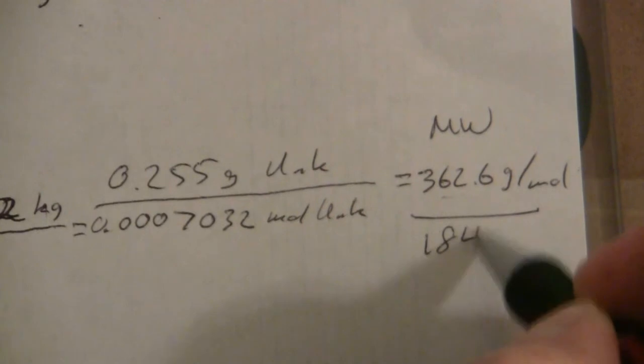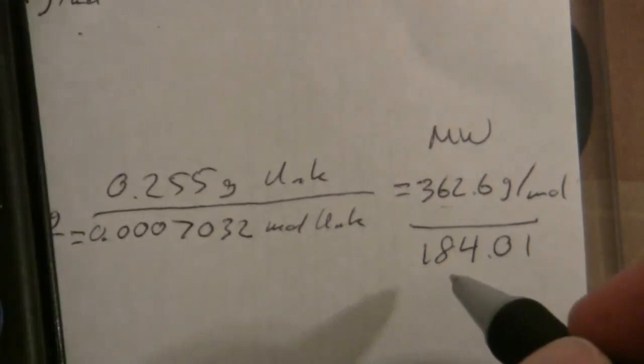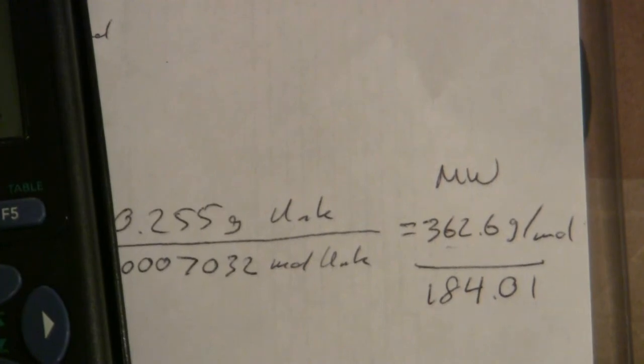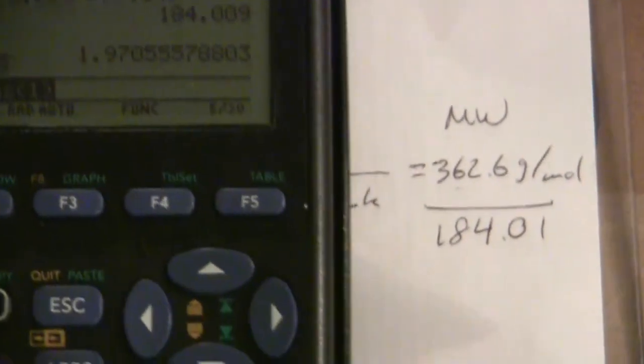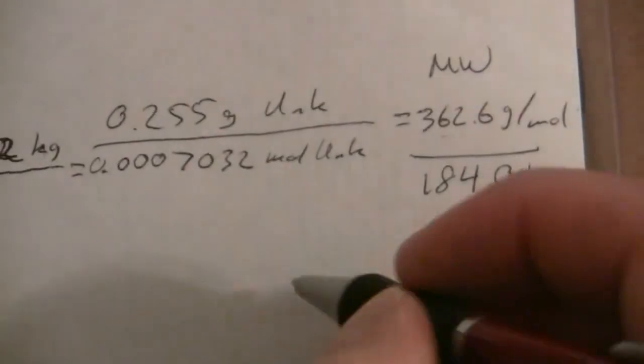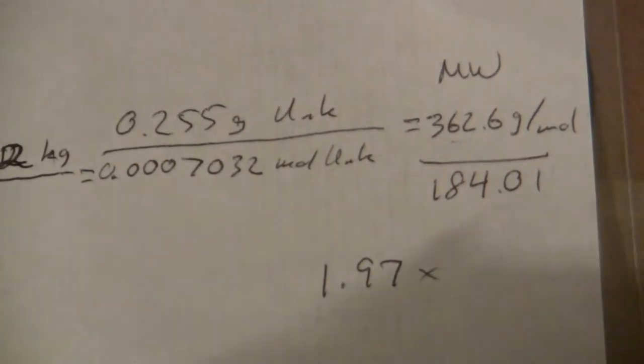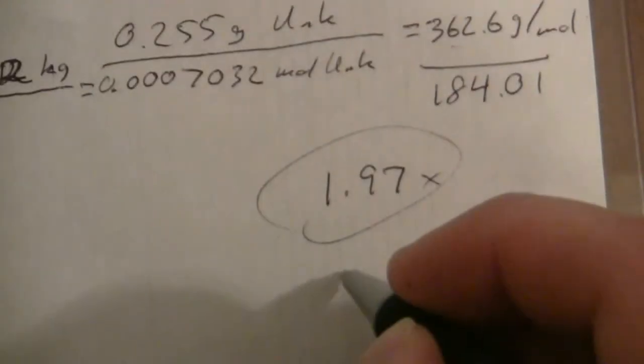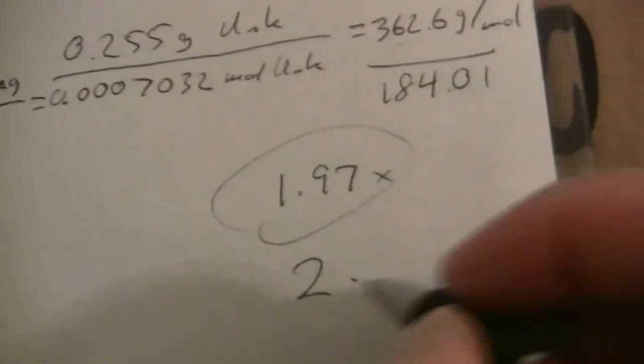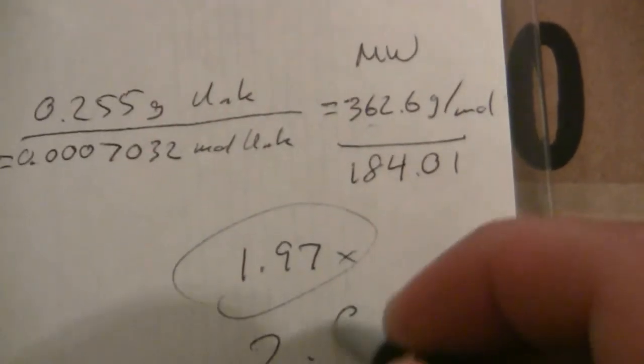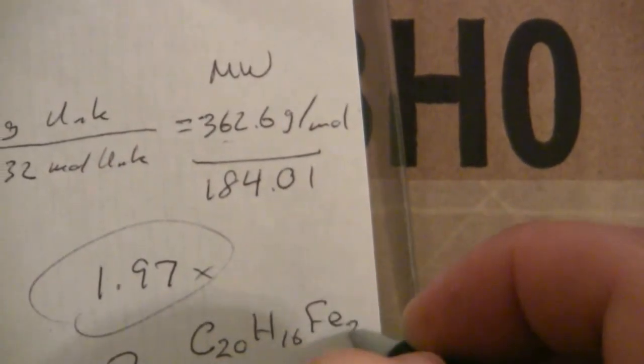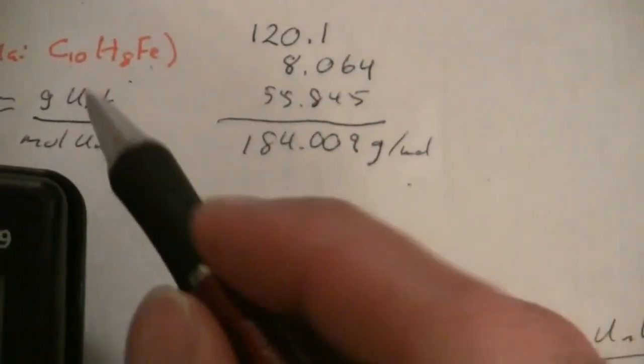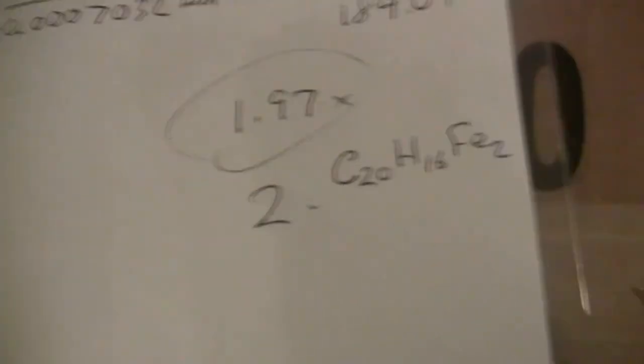I'm going to take that and divide it into here: 362.6 divided by that and what we end up with is 1.97. So 1.97, as a whole number we make that 2. So the molecular formula is going to be C20H16Fe2, 2 times 10, 8, and 1.